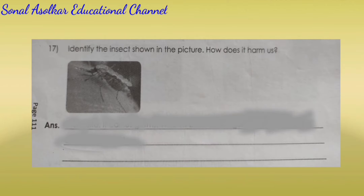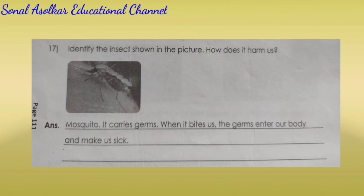Question number 17. Identify the insect shown in the picture. How does it harm us? Answer: It is a mosquito. It carries germs. When it bites us, the germs enter our body and make us sick.